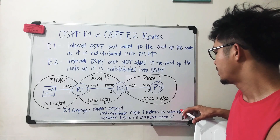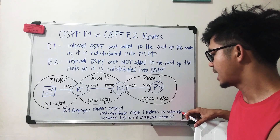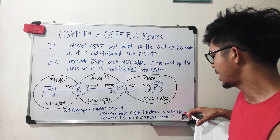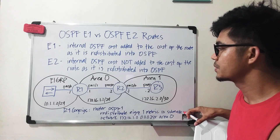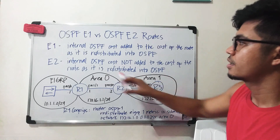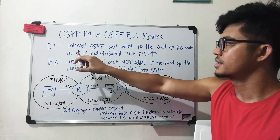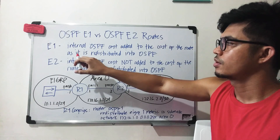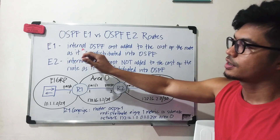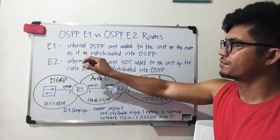The command shown is incomplete. You actually have to specify 'metric-type 1' if you want to see E1 as the type of your OSPF route.